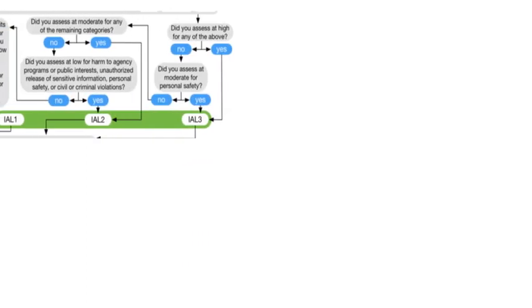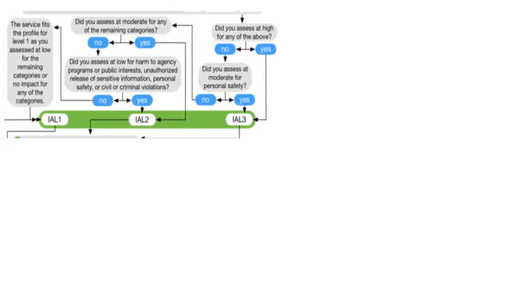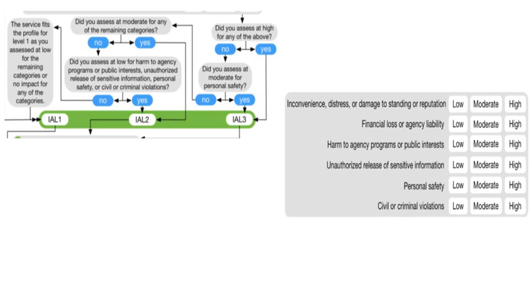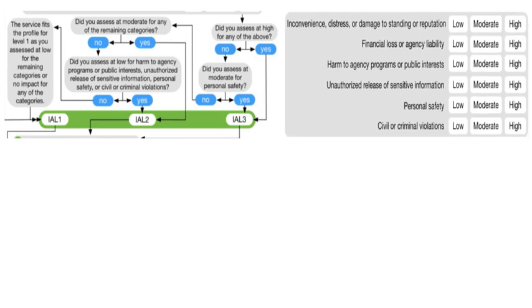If you have any highs in your impact category, you will have IAL 3. Moderate for personal safety is also IAL 3. If you have a moderate for any category other than public safety, your value is IAL 2. If you have a low for the bottom four categories, you will have IAL 2 as well. And if you have a low for the top two categories and no impact for the bottom four, then you have IAL 1.